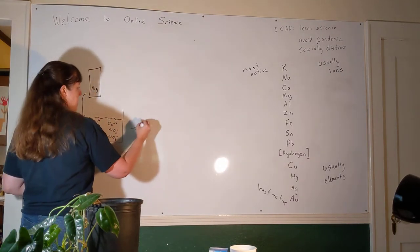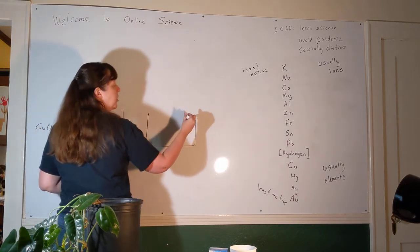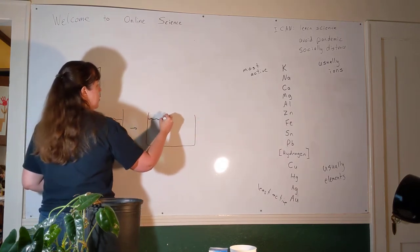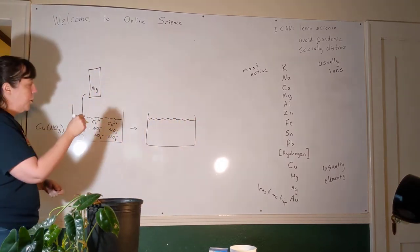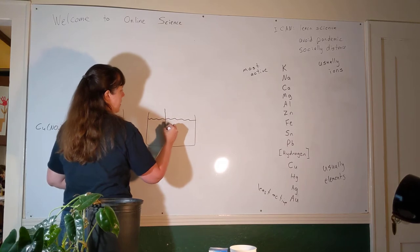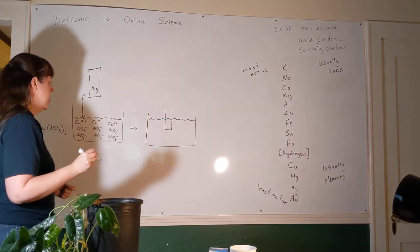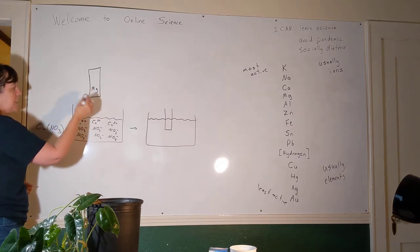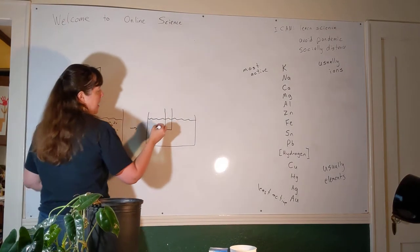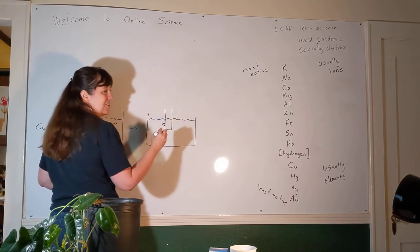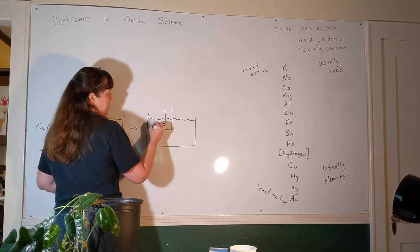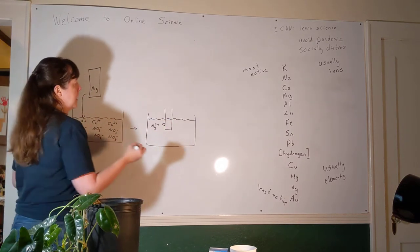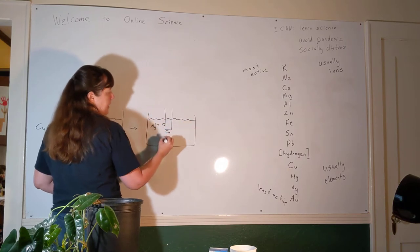When you watched the molecular-scale videos in the simulation, you should have seen that a copper ion floats up to the piece of magnesium and electrons get transferred. Electrons go from a magnesium atom to a copper atom. One magnesium atom loses two electrons and gives them to a copper atom. As a result, a copper atom sticks to the piece of magnesium and a magnesium ion floats away into solution.